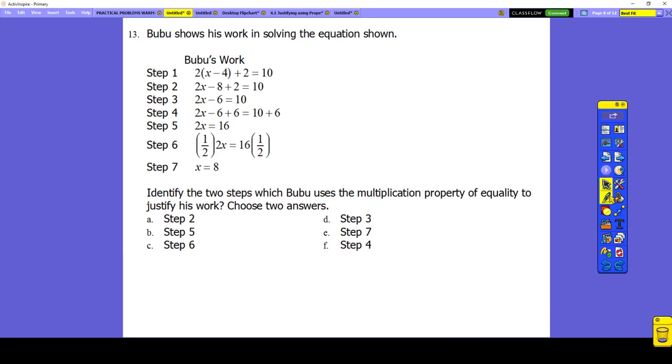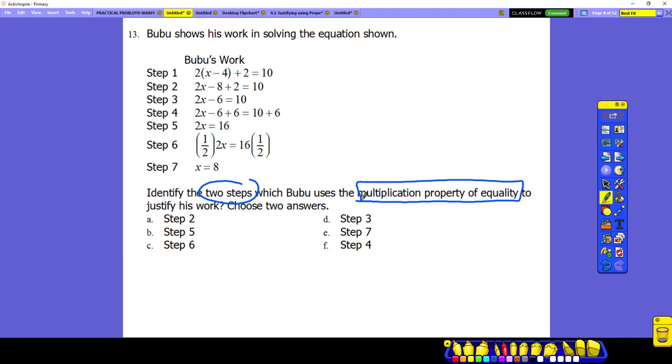All right. Let's solve. Identify the two steps wherein we use multiplication property of equality. Now remember, whenever we use this type of property, same thing with addition property, division property, subtraction property, it should be on both sides. Okay, both sides. So in what step we're in, we multiply on both sides?